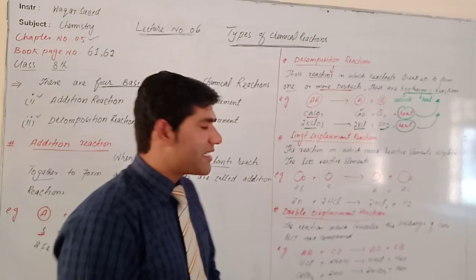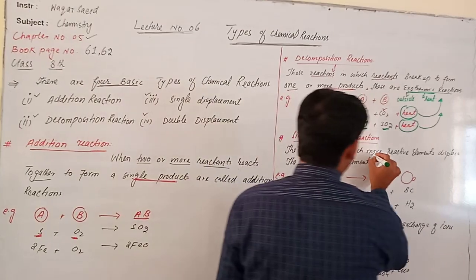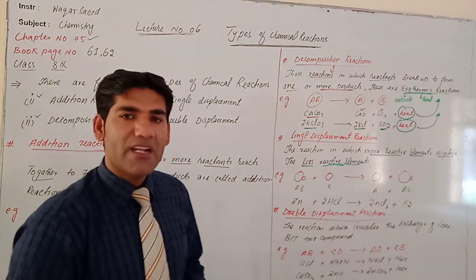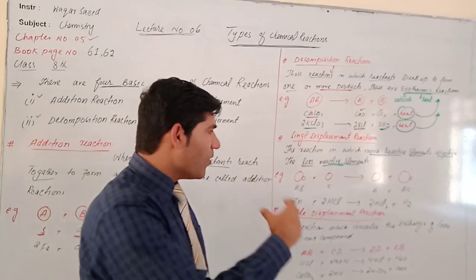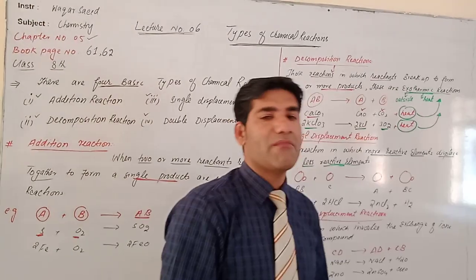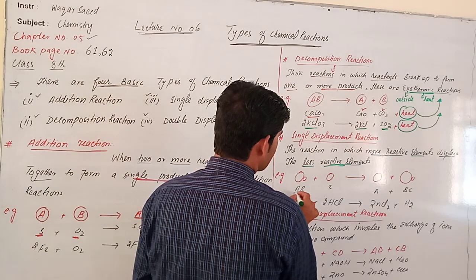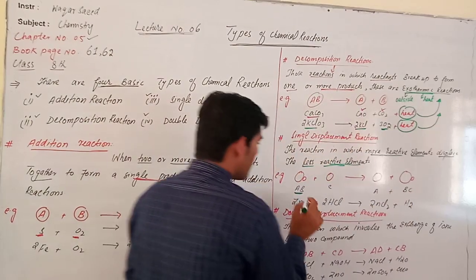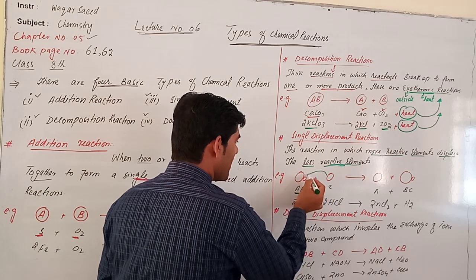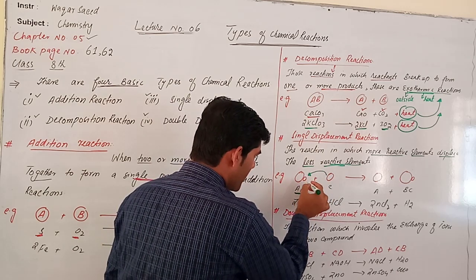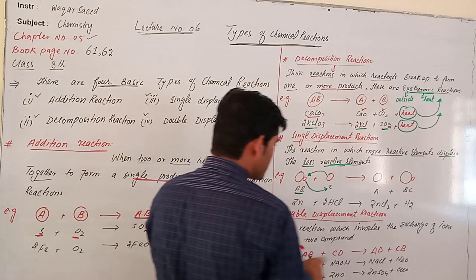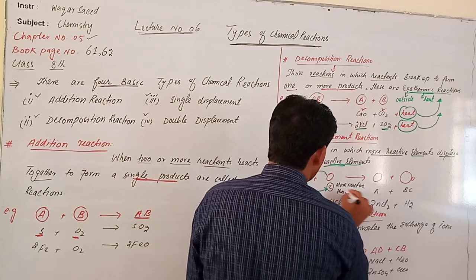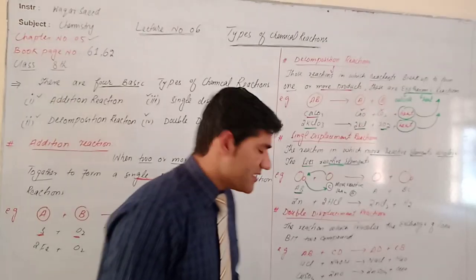The third type of chemical reaction is single displacement reaction. Those reactions in which a more reactive element displaces a less reactive element are said to be a single displacement reaction. Consider: B + C gives A + BC — C comes to the side of B and B is replaced by C, meaning C is more reactive than B. So B is displaced by C.